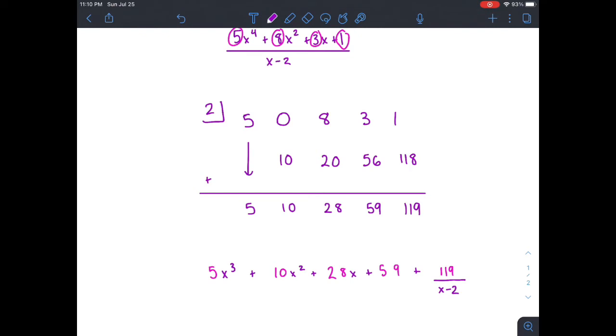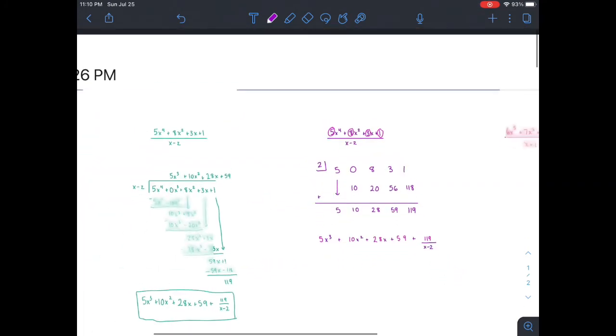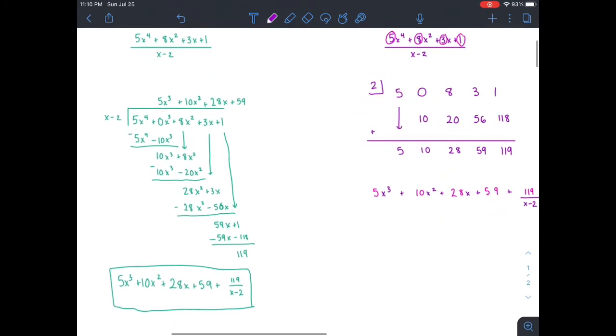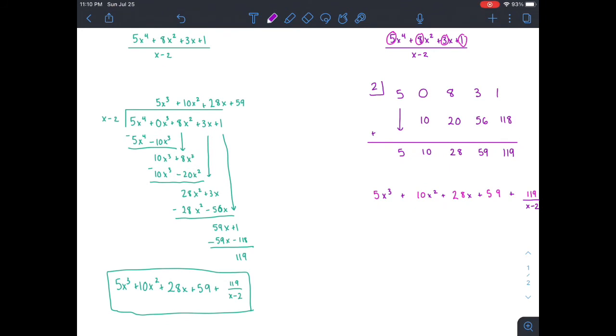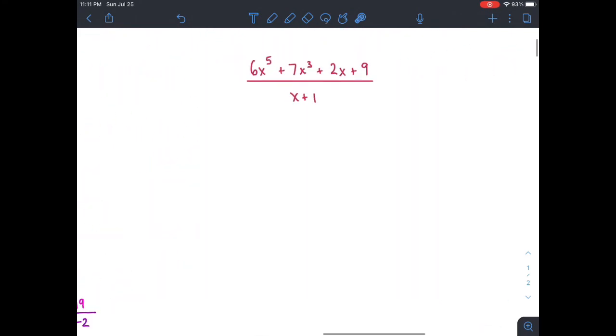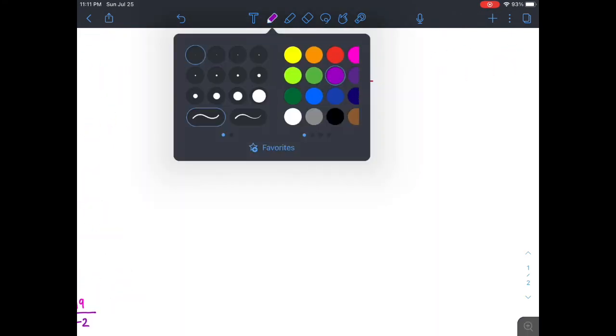So as you can see, that was a much simpler way of doing the exact same problem. And if we look back, we can notice that you can see some similarities between them too. Right here with the 59, the 119, the 28, and the 10 are all showing up right here. So let's do that one more time just so we make sure we get it.